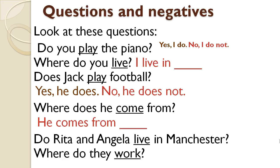Remember that you can use 'do' with a plural pronoun — they — or with Angela and Rita. Do they live in Manchester? Where do they work? But when we use Jack, that's why we use 'does.' So 'does' goes with singular nouns and 'do' goes with plural nouns. Jack is one person — that's singular. Rita and Angela are two people — that's a plural noun. So play, live, come, and work are all infinitive verbs, because they don't have S, ES, or IES.